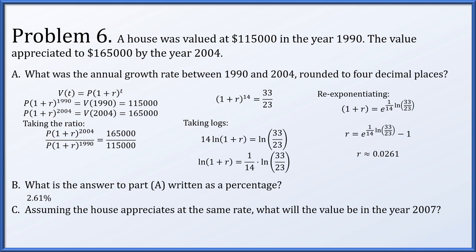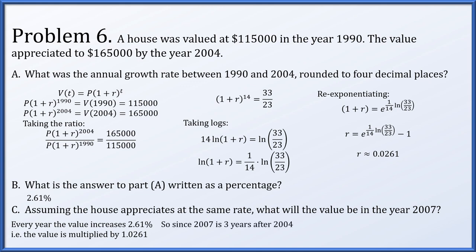What is the answer to part A written as a percentage? It's 2.61%. Assuming the house appreciates at the same rate, what will the value be in the year 2007? Every year the value increases by 2.61%, meaning we multiply by 1.0261. In 2007, that will be three years after 2004, so we multiply the 2004 value by 1.0261 cubed, which works out to be about $178,000 and change.